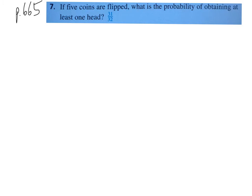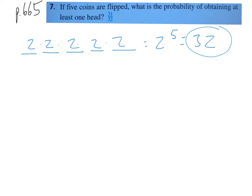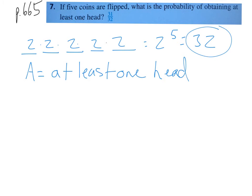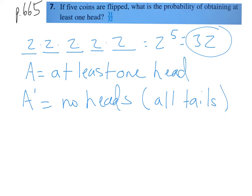Let's figure out the total number of outcomes using the slot method. Five coins means five slots, and each one could be heads or tails — two outcomes each. That's two to the fifth, which is 32. So there are 32 possible outcomes when you flip five coins. Now for our events: let A be the event of getting at least one head. Instead of tackling that directly, let's talk about the complement. The opposite of getting at least one head is getting no heads, which is the same thing as all tails — a nice straightforward event.